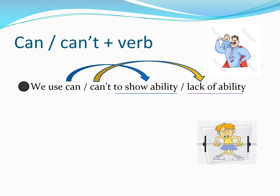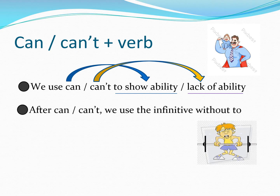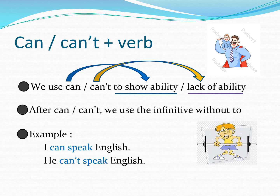Ahmad can't lift a 2 kilogram load. After can or can't, we use the infinitive without to. For example: I can speak English. He can't speak English. We have to use the root word — speak — after can or can't.